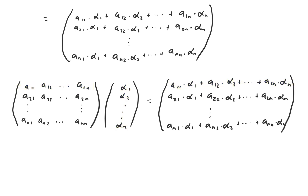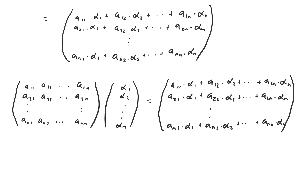To get the second entry in the resulting column vector, we take the second row of the matrix and again multiply it element-wise by the column vector that represents v and add all the pieces together. And we keep doing this until we get to the nth row of the matrix, multiplying that by the column vector that represents v element-wise, and adding all the pieces together gives the nth entry in the resulting column vector.